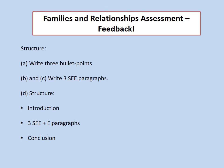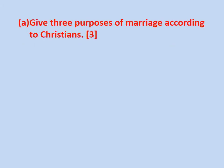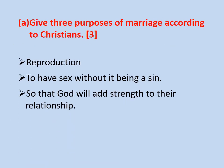I'm going to go through each question. We've got the structure on the board on the first slide. Here are the questions: give three purposes of marriage, explain different Christian views about raising children religiously, compare different Christian beliefs about contraception, and 'marriage should be between a man and a woman — discuss.' For question A, because it says three things, it's looking for three bullet points, not an SCE. You could just put: reproduction, to have sex without it being a sin, and so that God will add strength to their relationship. Most people did well. Occasionally people did two very similar bullet points and dropped a mark, or put things that were a bit vague.